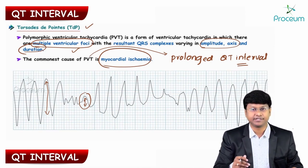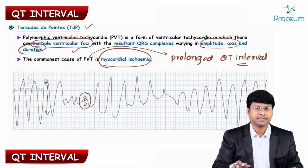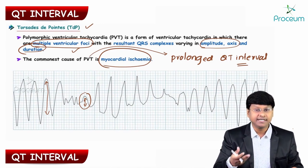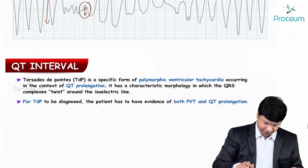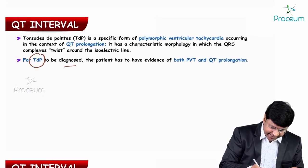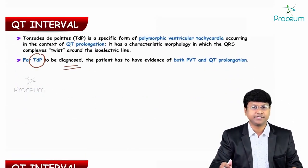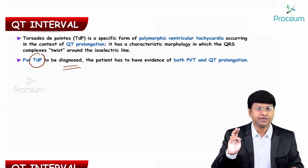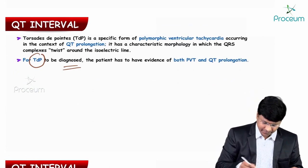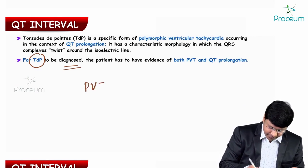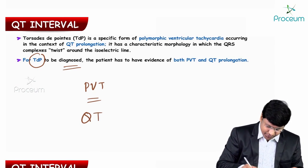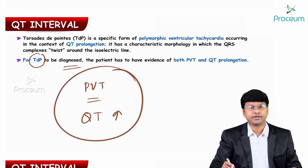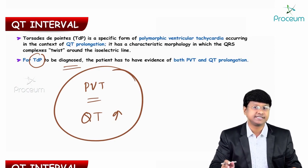In patients with torsades de pointes, the polymorphic ventricular tachycardia is mainly because of multiple ventricular foci. For torsades de pointes to be diagnosed, there are two important criteria: polymorphic ventricular tachycardia must be present, and QT prolongation must also be present. These are the two important criteria for torsades de pointes.